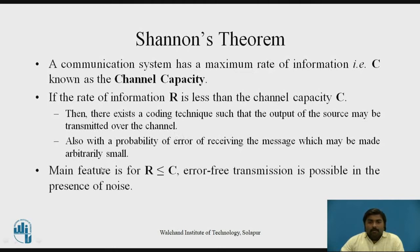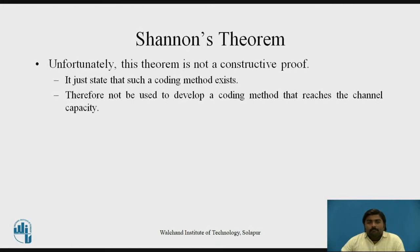This is the statement: the main feature is that when R is less than or equal to C, you can achieve error-free transmission even in the presence of noise. Unfortunately, the theorem is not a constructive proof — it just states that such a coding method exists, but does not provide a proof. That's why it cannot be used to develop a coding method that actually reaches the channel capacity.